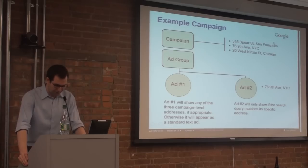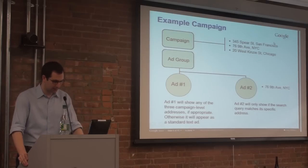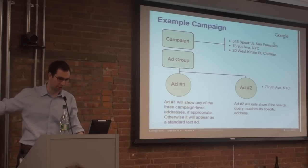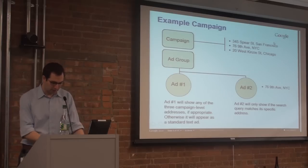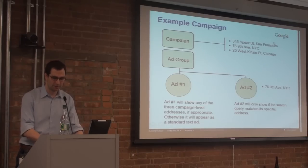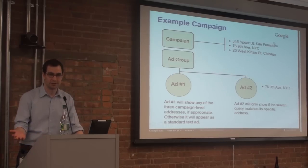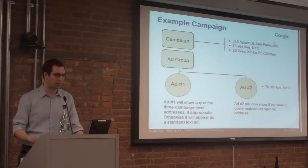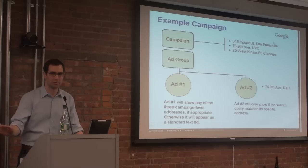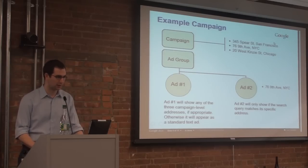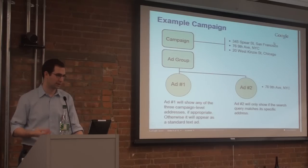Let's take a look at an example. Here we have a campaign that contains a single ad group and two ads. At the campaign level, I have created three individual addresses: one in San Francisco, one in New York, and one in Chicago. Ad number one has no ad overrides attached to it, and therefore it can show for any of those three cities. But if somebody searches for Dallas or Omaha or something, it could show just as a regular text ad without the address. Ad number two has one specific address — this address in New York City attached to it — and that means it will only show for people searching specifically in or for New York City.